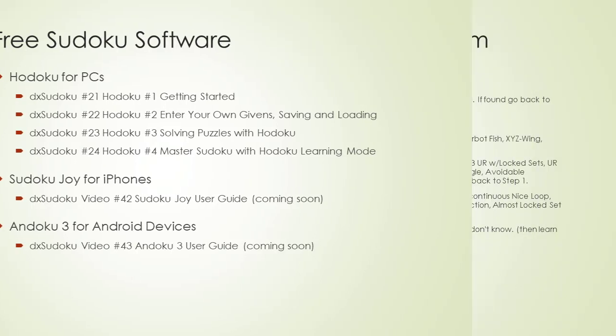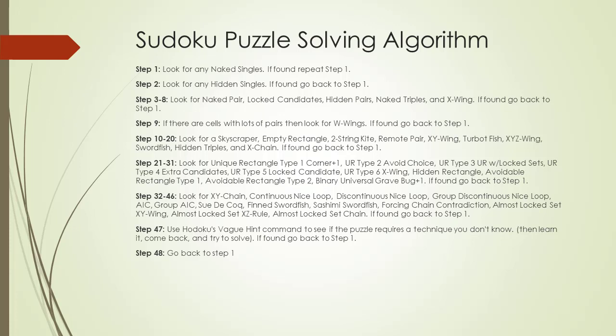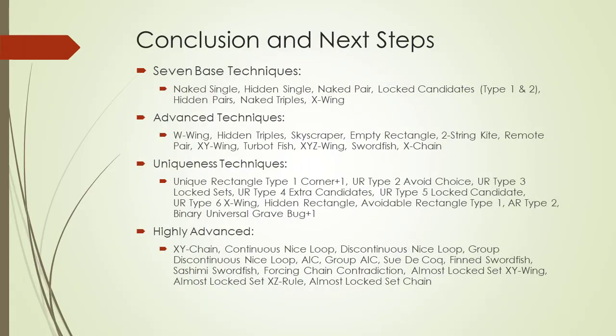Subscribe to our channel to be updated. We are going to discuss a general Sudoku puzzle-solving algorithm. Many people have different strategies, but this strategy requires the least amount of thought, assuming you are an expert at using the techniques referenced. The algorithm works by repeating the seven base techniques until you get stuck, then trying more and more advanced techniques until something works. There are 7 base techniques so frequent that many people make a career out of solving puzzles requiring only these seven.